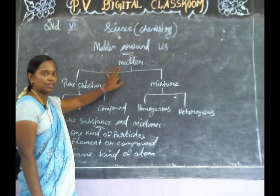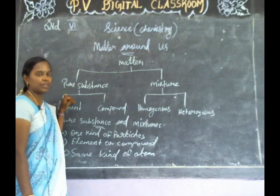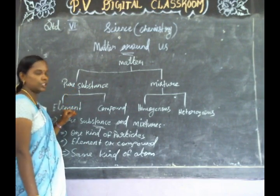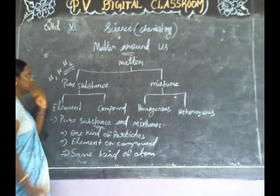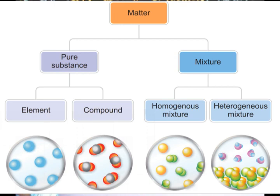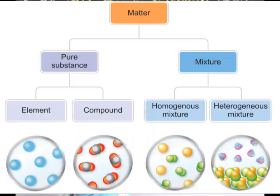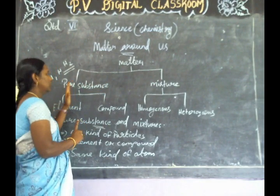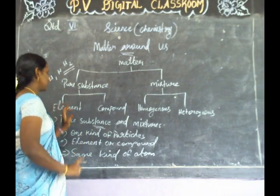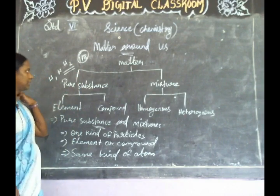Next one — matters. Matter means occupying space and having mass. Matter means pure substance and mixtures. Pure substance means element and compound. Element means the periodic table — 118 elements are present. That is the element mentioned.